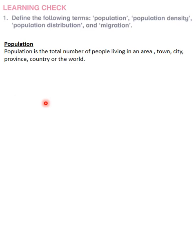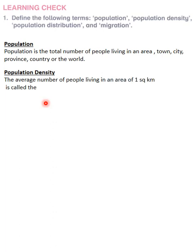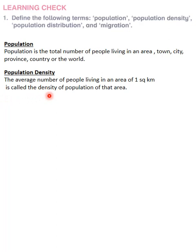Next is population density. The average number of people living in an area of one square kilometer is called the density of population of that area. One square kilometer is the basic measuring unit of population density — that is how we measure how dense the population is.